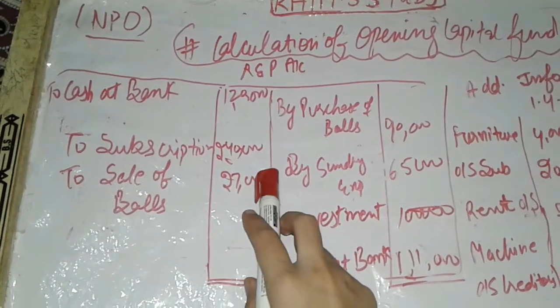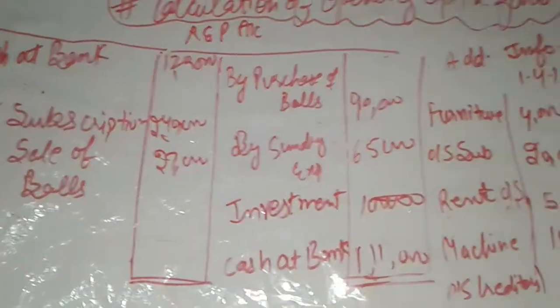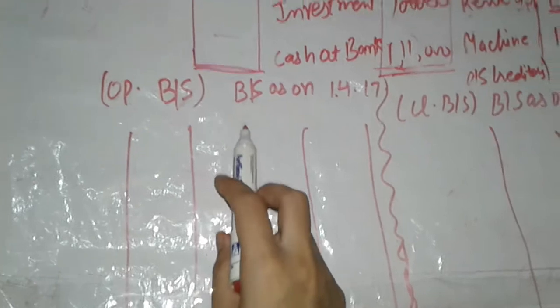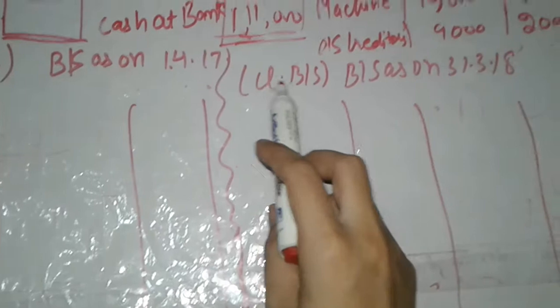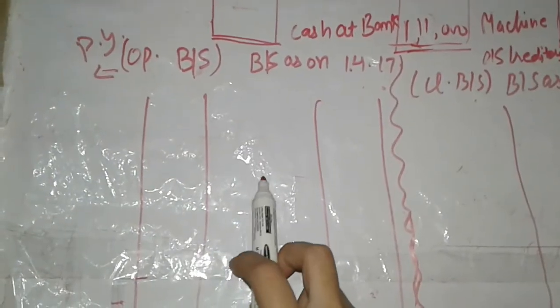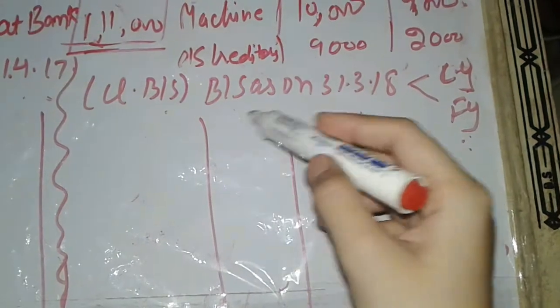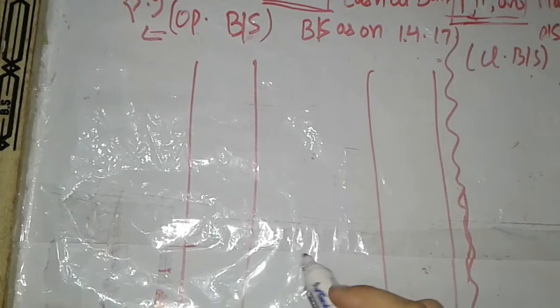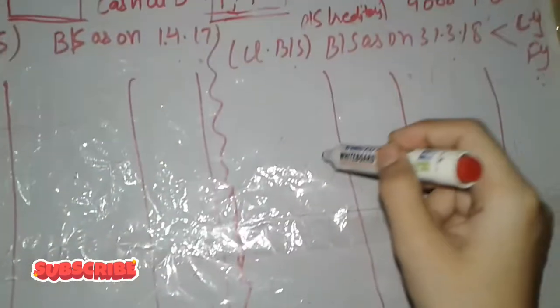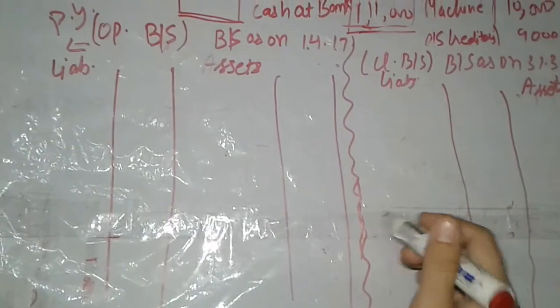Let's clarify with a numerical. The information related to the receipts and payments account and additional information are both given. From this we will prepare the opening balance sheet and the closing balance sheet. The opening balance sheet is as on 1st April 2017, and the closing balance sheet is as on 31st March 2018. The opening balance sheet is always linked with the previous year, while the closing balance sheet is linked with the current year and future year. We will first make the opening balance sheet to calculate the capital fund.